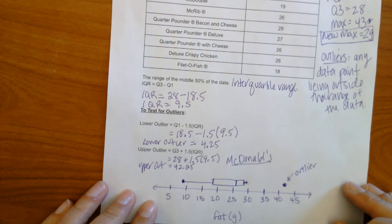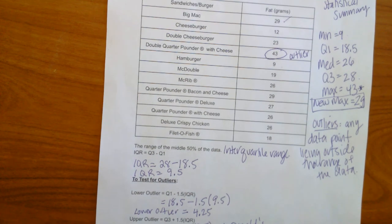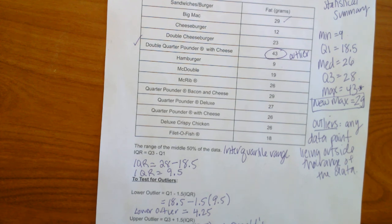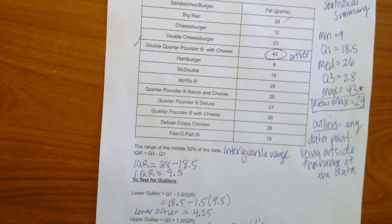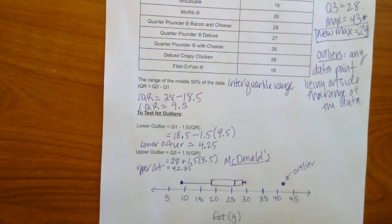And what I want to know now is who is the outlier? 43 grams of fat. So let's look. Oh, the double quarter pounder with cheese. That is our outlier. Wow. Okay. So this is Dr. Mears. This has been modified box plot. Hope it helps.